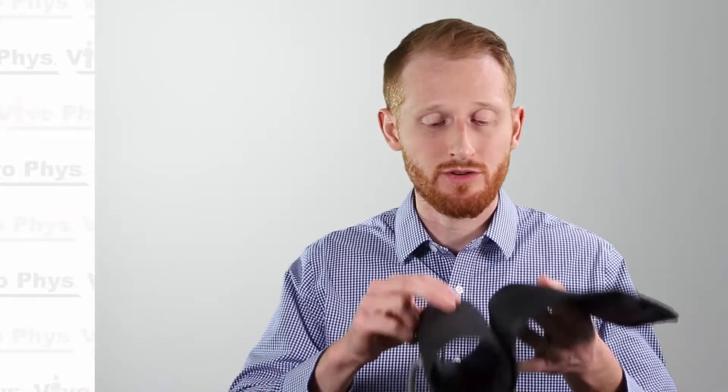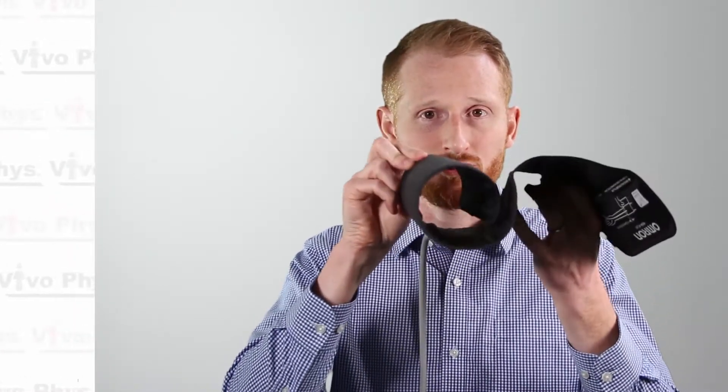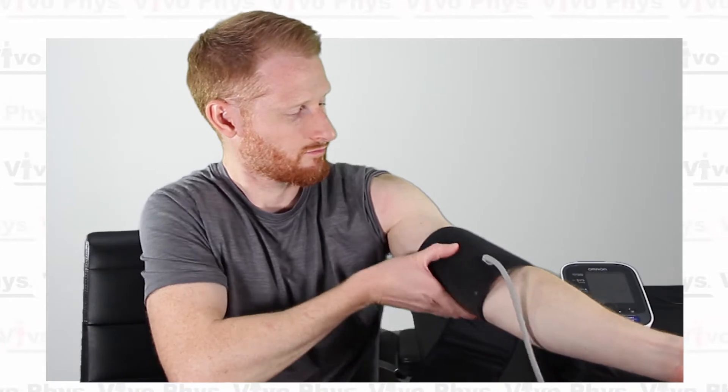Now you're going to want to apply the blood pressure cuff to your left arm. If you're using this Easy Wrap cuff, make sure that you don't try to undo this coil because you might break the cuff. So go ahead and slide the cuff up the arm without undoing the coil.